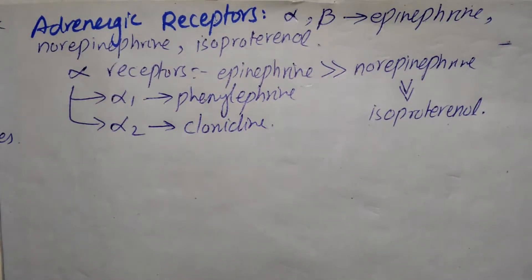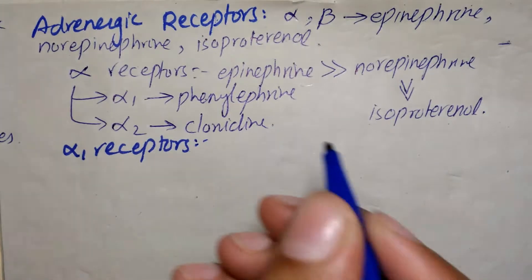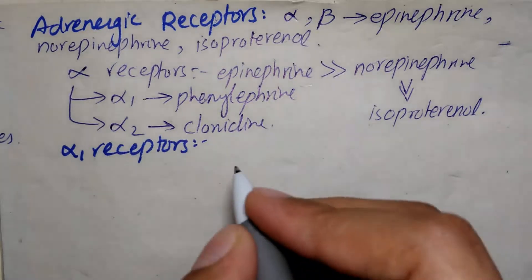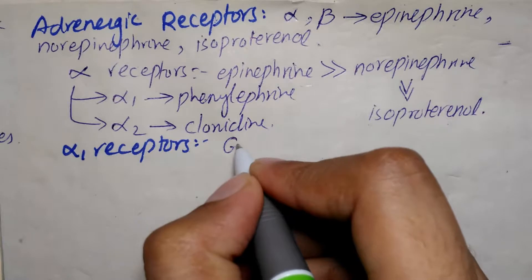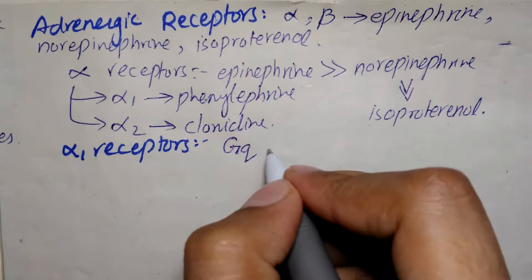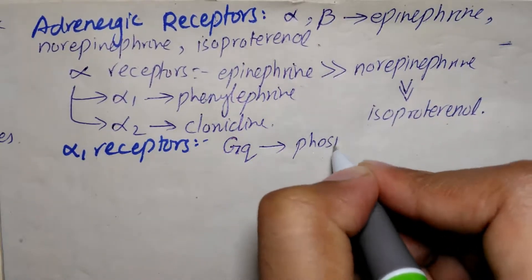Now looking at alpha 1 receptors in detail — how they work and how they cause cellular responses. Alpha 1 receptors are G-protein coupled receptors, and the G protein present in this receptor is GQ. This type of G protein activates phospholipase C.